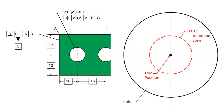People might look at this drawing, see the position tolerance of 0.5, and say that the hole is 10 plus or minus 0.25 from datum C. Let's take a closer look. The basic dimensions specify the true position — that is where the center of the hole would be in a perfect world.